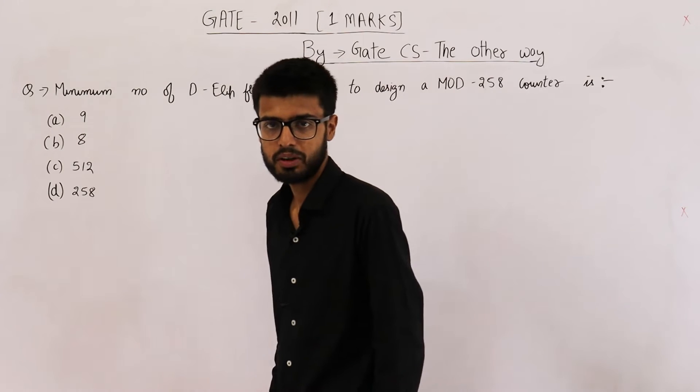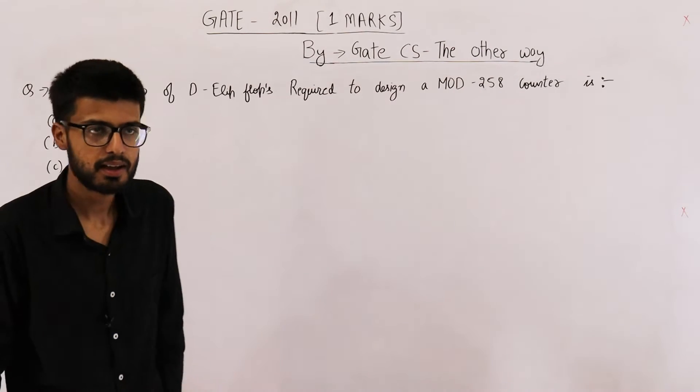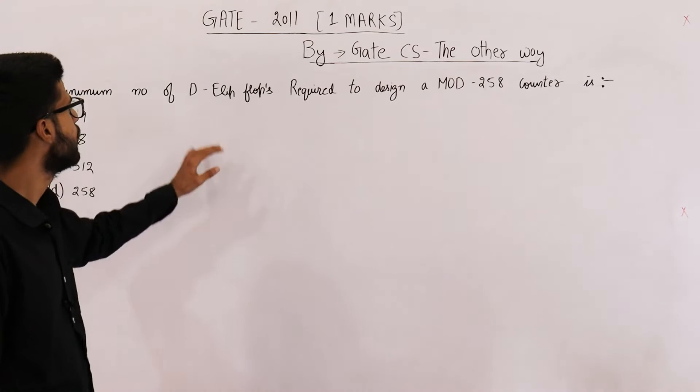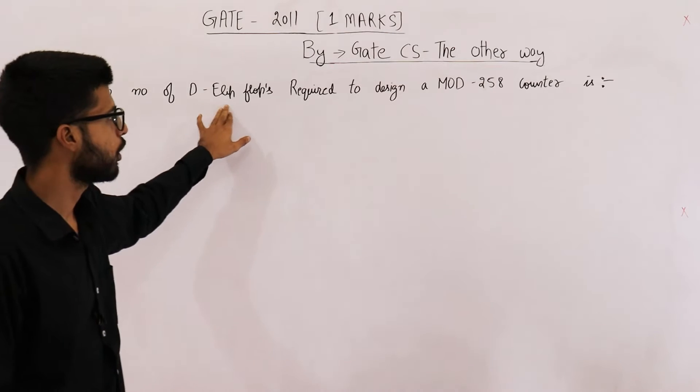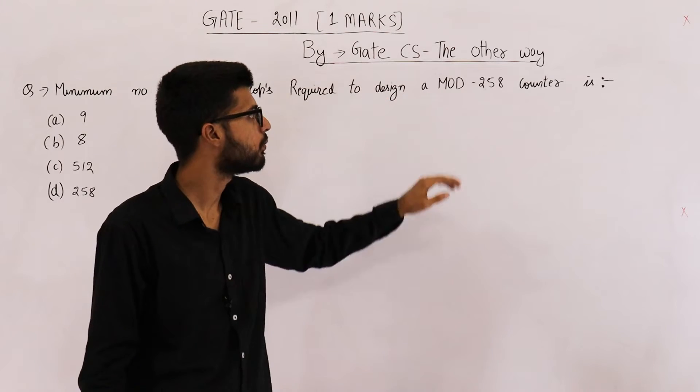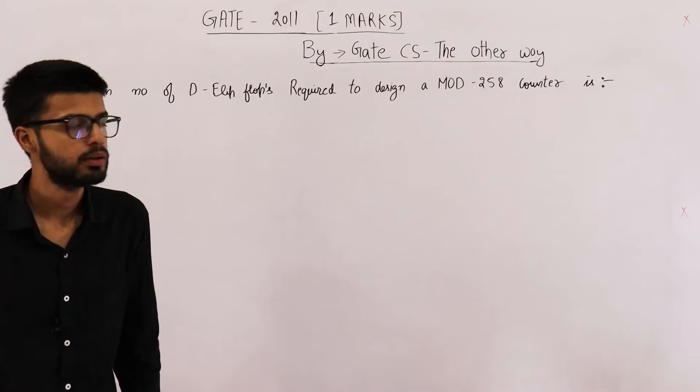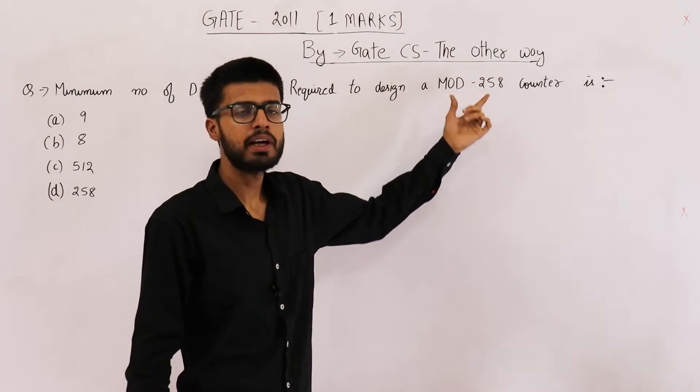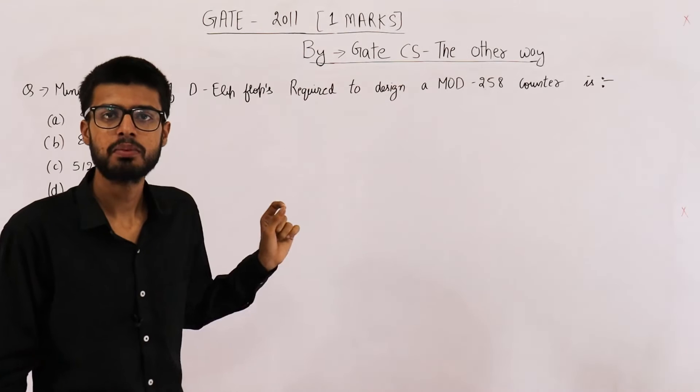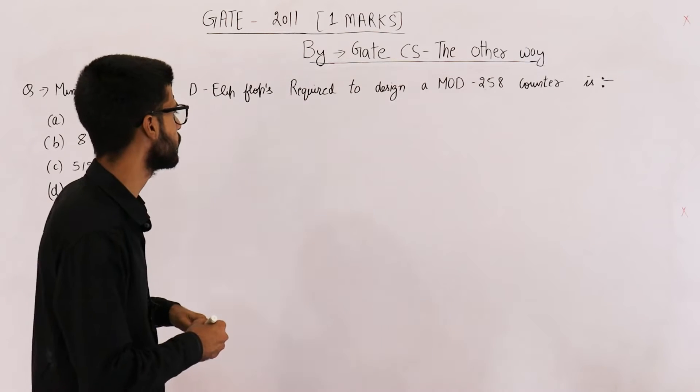Hello students, welcome back. This question is from the GATE 2011 exam. They're asking what is the minimum number of D flip-flops required to design a mod 258 counter. Mod 258 means this counter must have 258 different states.